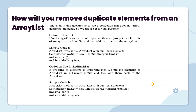How will you remove duplicate elements from an ArrayList? We have multiple options. Using Set — if ordering of elements is not important, then we put the elements of ArrayList into a HashSet and then add them back to the list. Like this: create ArrayList, create HashSet, clear the list, and myList.addAll(mySet). You can also use LinkedHashSet.